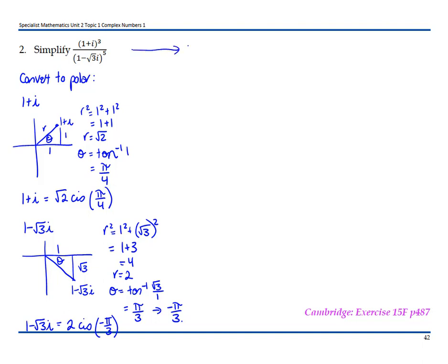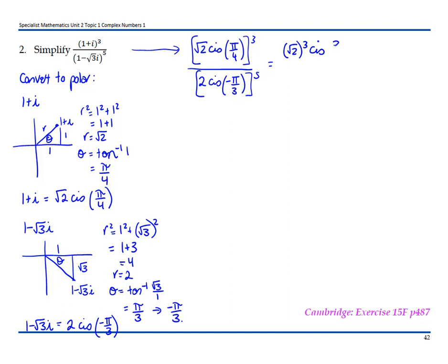So now what we have is (√2 cis(π/4)) all cubed, all over (2 cis(−π/3)) all to the power of 5. Applying De Moivre's theorem, that becomes (√2)^3 cis(3π/4) all over 2^5 cis(−5π/3). Now, (√2)^3 is 2√2, so we have 2√2 cis(3π/4).